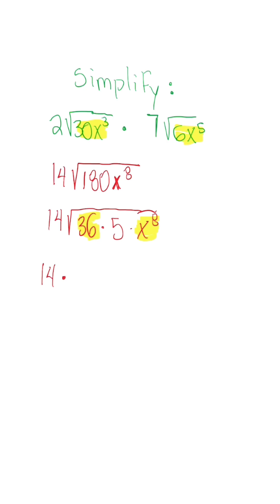Once we simplify we're going to have 14 times the square root of 36 which is 6, radical 5 stays the same, and x to the eighth when we divide it by the root we're going to get x to the fourth power.